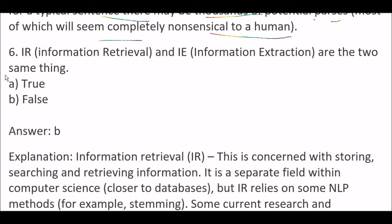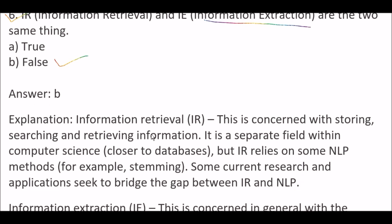Next question: IR (information retrieval) and IE (information extraction) are two same things — is true or false? The answer is false. Information retrieval is concerned with storing, searching, and retrieving information; it is a separate field within computer science, closer to databases, though IR relies on some NLP methods such as stemming, and some research seeks to bridge the gap between IR and NLP.